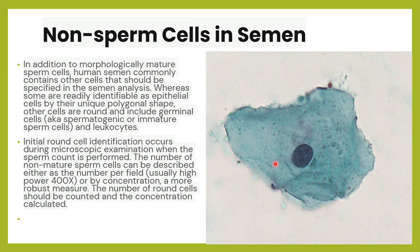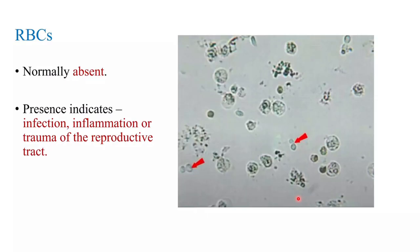Certain other non-sperm cells are also seen and should be specified — some are readily identifiable, like epithelial cells, while others are very difficult to identify, like germ cells. RBCs are usually absent but can sometimes appear in semen analysis due to trauma, infection, or inflammation.